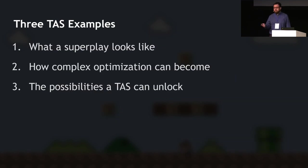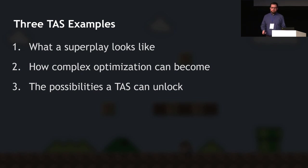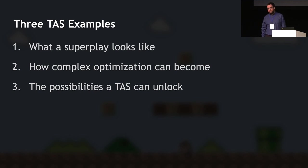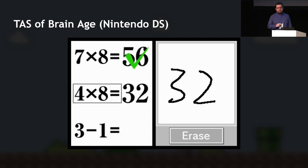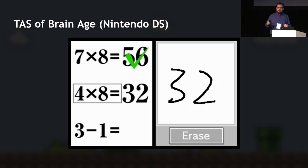When you do complete your TAS, the result looks like black magic. I wanted to show three examples. The first is a short example of what a superplay can look like — breaking the game in an entertaining way. The second shows how complex the optimization problem can become, using Super Mario 64. And the third shows some crazy possibilities that a TAS can unlock.